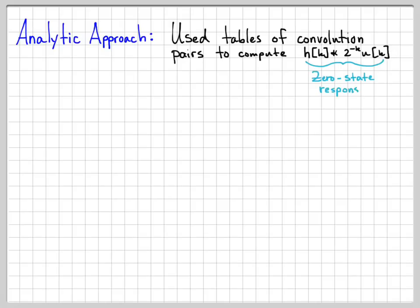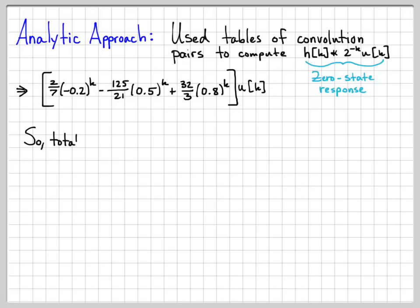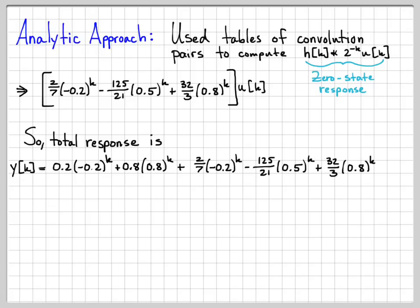This is what we call the zero-state response. We did this and we figured out that the zero-state response was equal to this quantity right here. So all of these pieces put together gives us the total response. So the total response is the zero-input response plus the zero-state response.